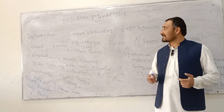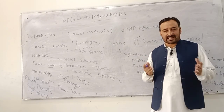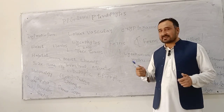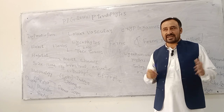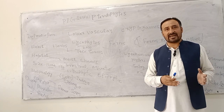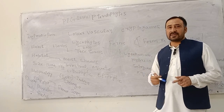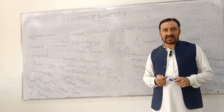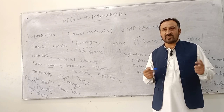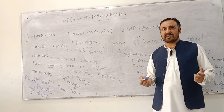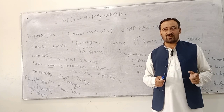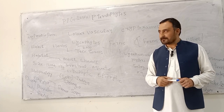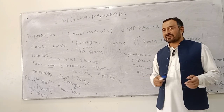Today we are discussing about the pteridophytes. What are the pteridophytes? The word pteridophyte is taken from two Greek words — pteron and phyta. Pteron means feather and phyta means plants. So these are a special group of plants whose body is just like a feather. It is further divided into two main groups.